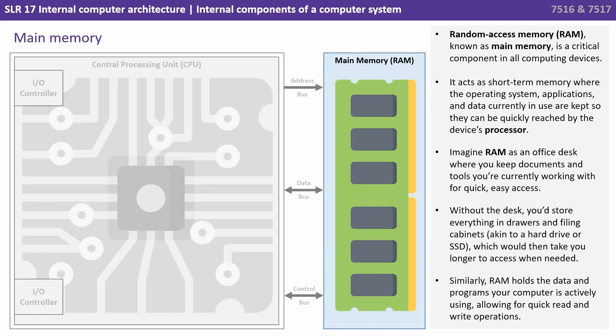Random access memory, RAM, also known as main memory, is a critical component in all computing devices. It acts as short-term memory, where the operating system, applications and the data currently in use are kept, so they can be quickly reached by the device's processor. Imagine RAM as an office desk where you keep documents and tools you're currently working with for quick, easy access. Without the desk, you'd have to store everything in drawers, boxes and filing cabinets — akin to a hard drive or solid state drive, which would then take you longer to access when needed. In a similar fashion, RAM holds the data and programs your computer is actively using, allowing for quick read and write operations.